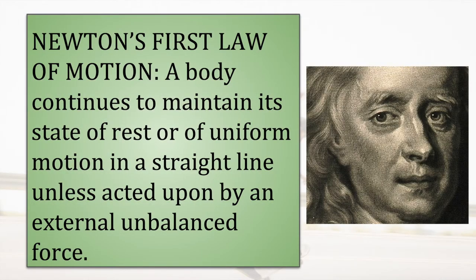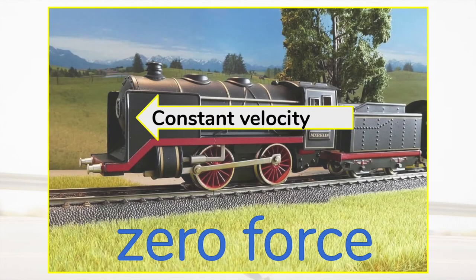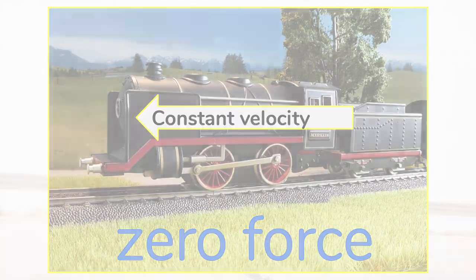Isaac Newton put this idea into one of his three famous laws of motion. Unless there is an unbalanced external force, a body will continue moving in a straight line, or it will continue to stand still — which is a special case where its velocity is zero. Newton's First Law gives us a definition for force: something which changes a body's velocity. If an object is seen travelling at a constant speed in a straight line, we can deduce that the vector sum of forces acting on it is zero.